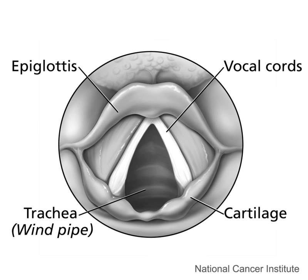Coronal consonants are made with the tip or blade of the tongue and, because of the agility of the front of the tongue, represent a variety not only in place but in the posture of the tongue. The coronal places of articulation represent the areas of the mouth the tongue contacts or makes a constriction, and include dental, alveolar, and post-alveolar locations. Tongue postures using the tip of the tongue can be apical if using the top of the tongue tip, laminal if made with the blade of the tongue, or sub-apical if the tongue tip is curled back and the bottom of the tongue is used. Coronals are unique as a group in that every manner of articulation is attested. Australian languages are well known for the large number of coronal contrasts exhibited within and across languages in the region.